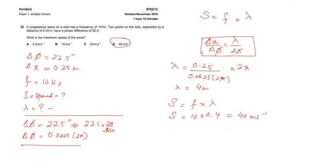So 2 pi, 2 pi will be canceled out and we will get the wavelength is 4 meter. The speed is frequency times wavelength 10 times 0.4 equals 40 meter per second, which is option D.